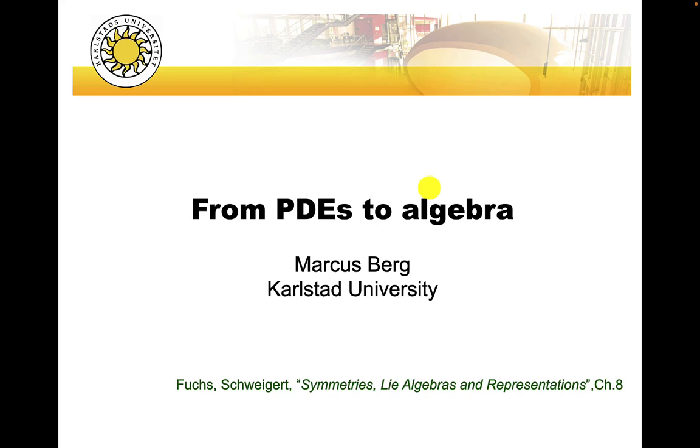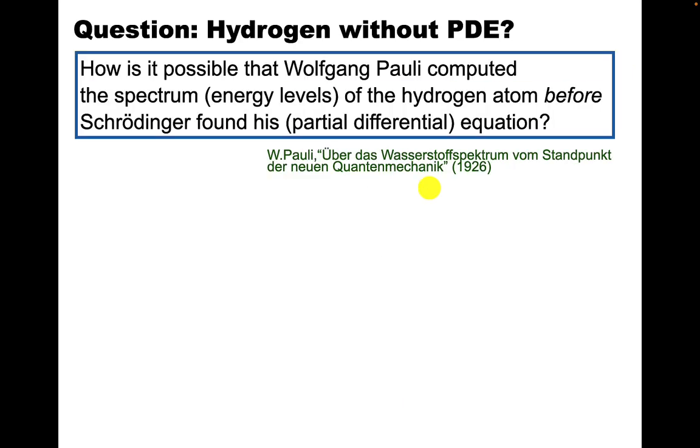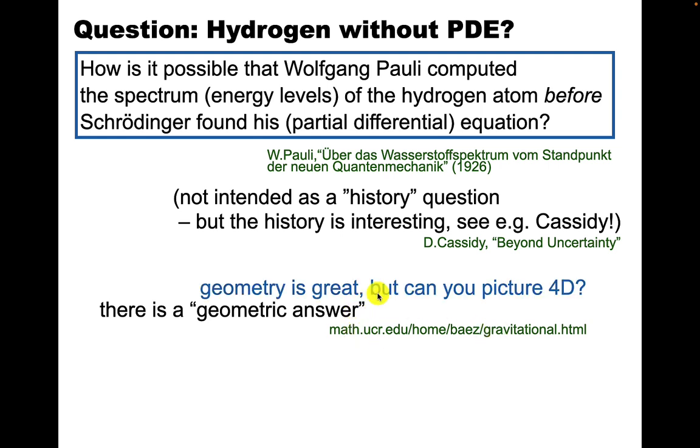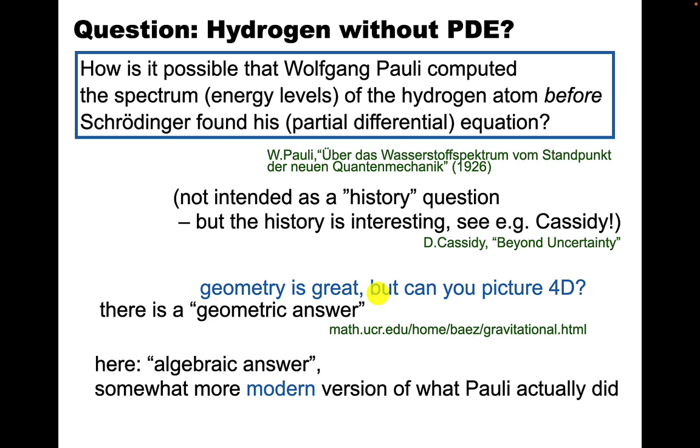From partial differential equations to algebra - I mostly refer to Lie algebra, where Lie is a person. So one physics question here is how could Wolfgang Pauli solve the hydrogen atom and compute the spectrum without the Schrödinger partial differential equation? He did this in 1926. I don't mean this as a history question, though the history is interesting. I also don't really mean a geometric answer in four dimensions.